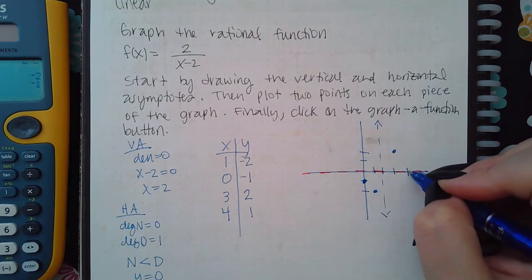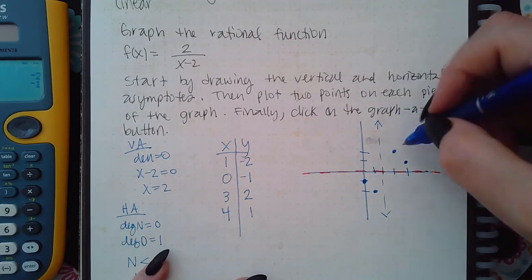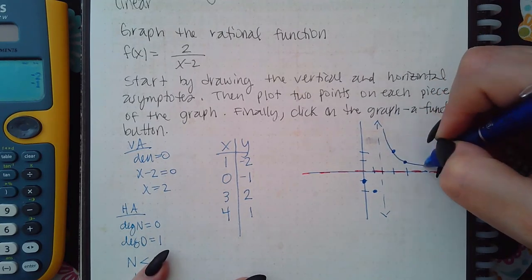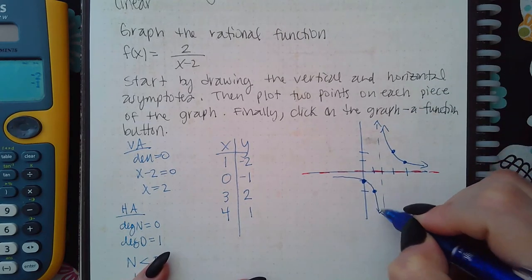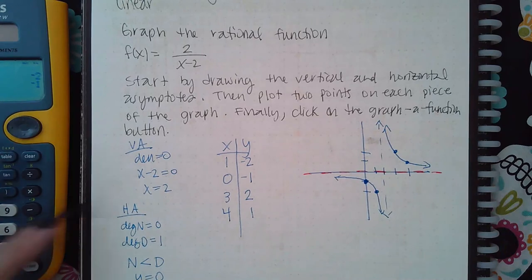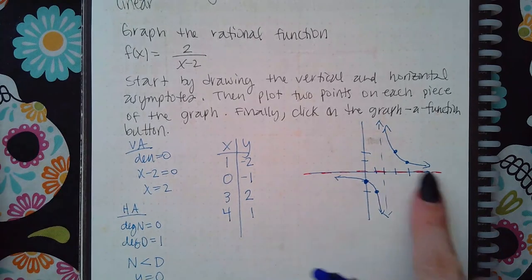And then four and positive one. So when you click on the graph a function, it's going to draw the image like this. And then that's it, you're done.